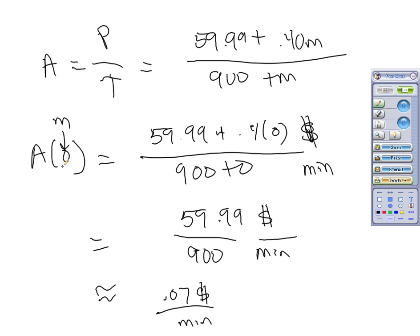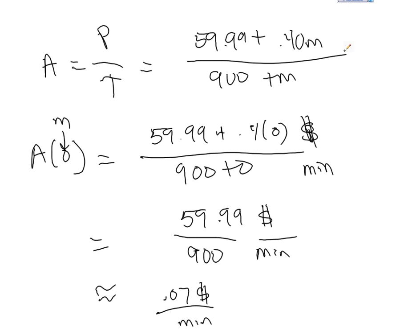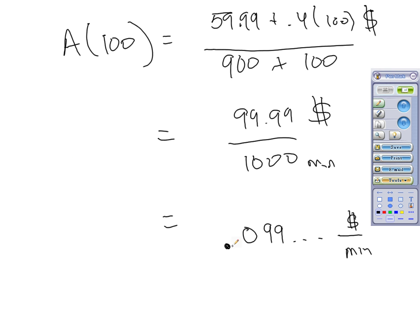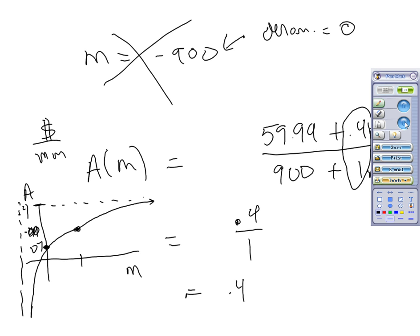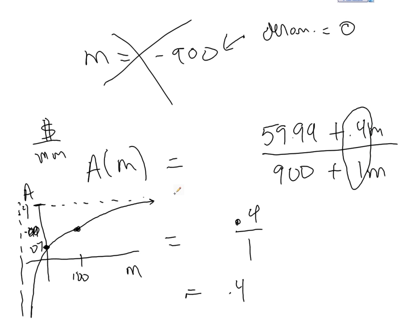It seems that the output values were all below that asymptote. So 0.07, that's for 0 minutes, that's your vertical intercept. 0.09 a minute, that's 100 minutes later, or if you've used 100 minutes. So this would be 100.